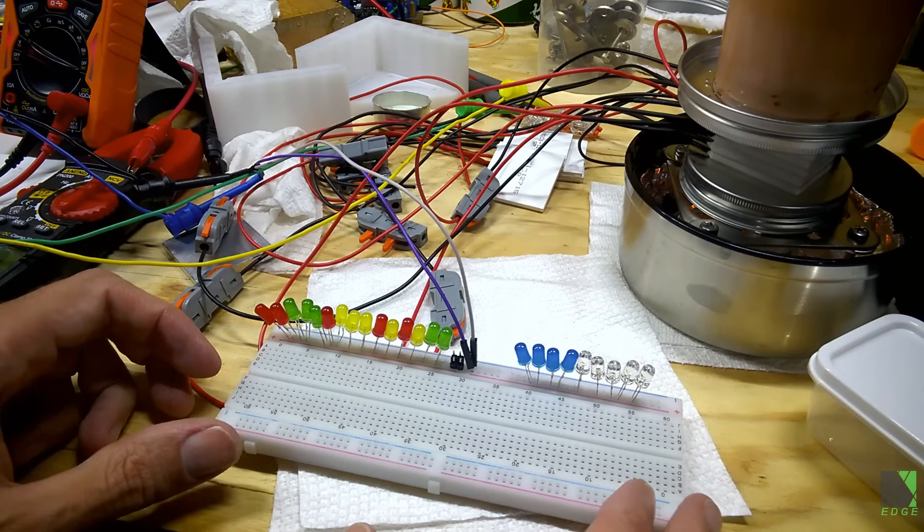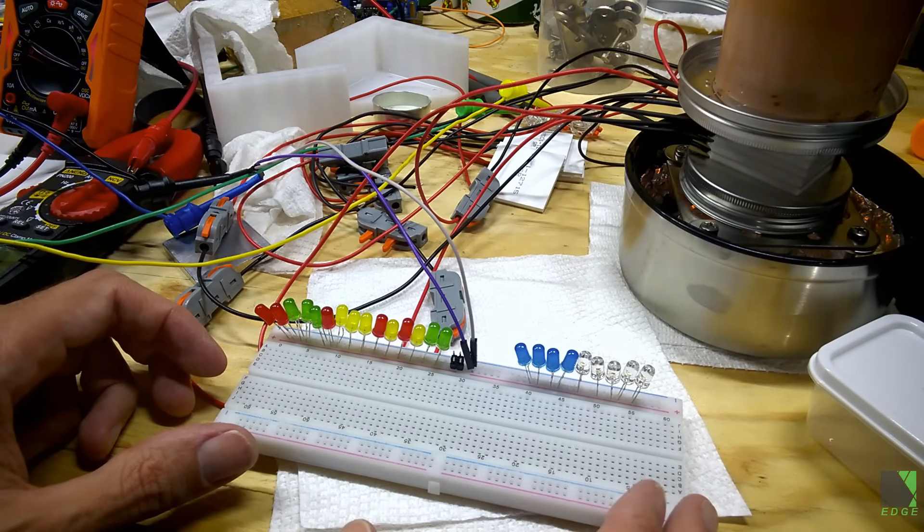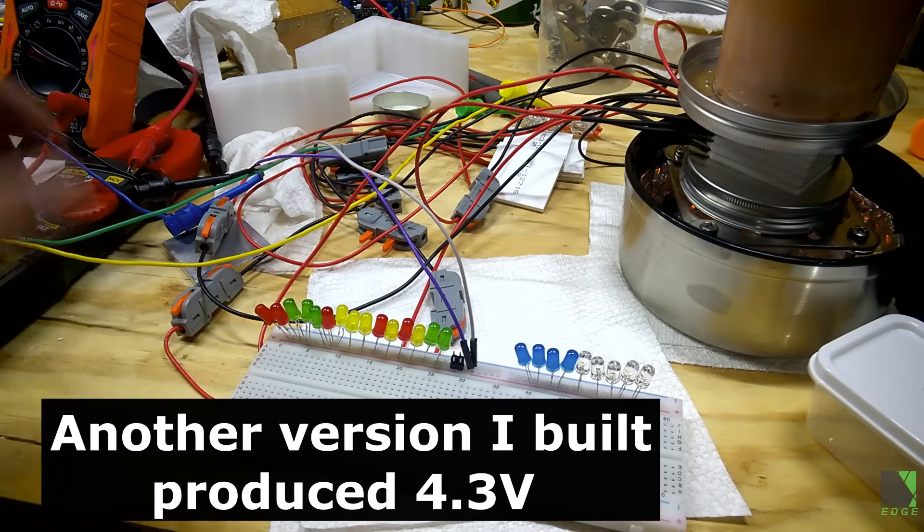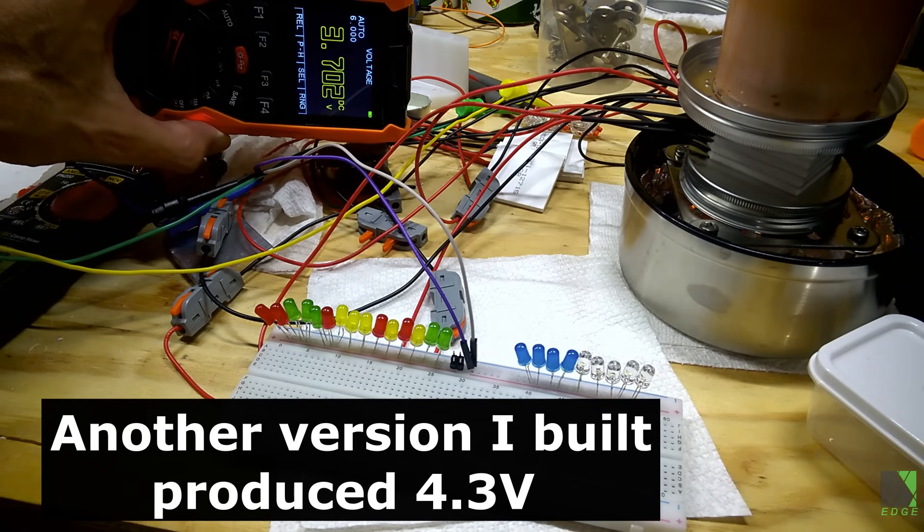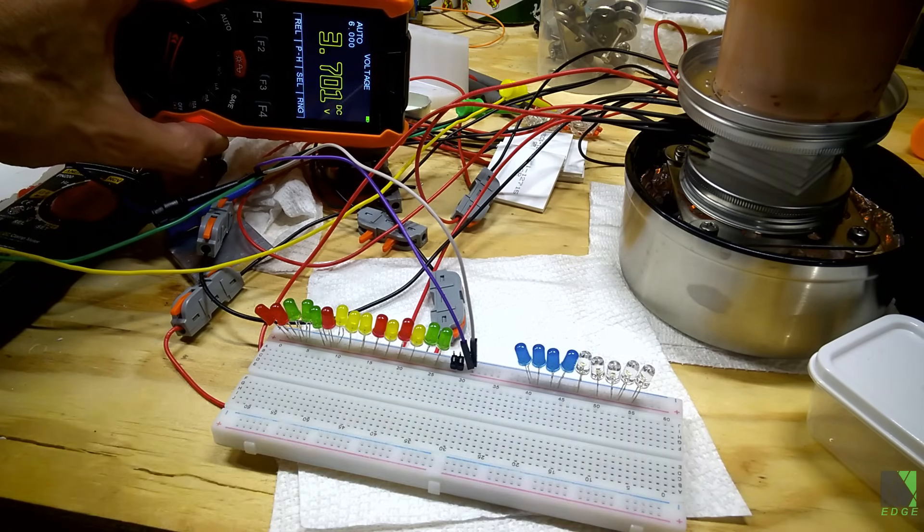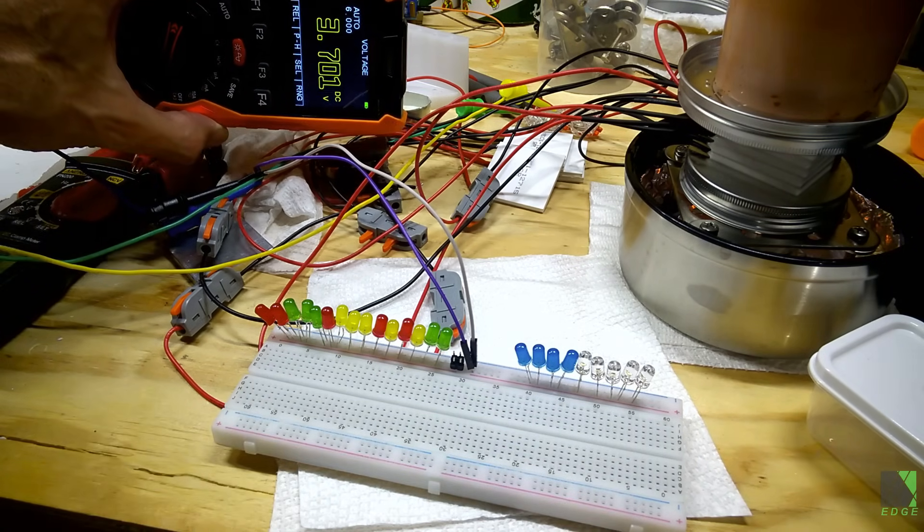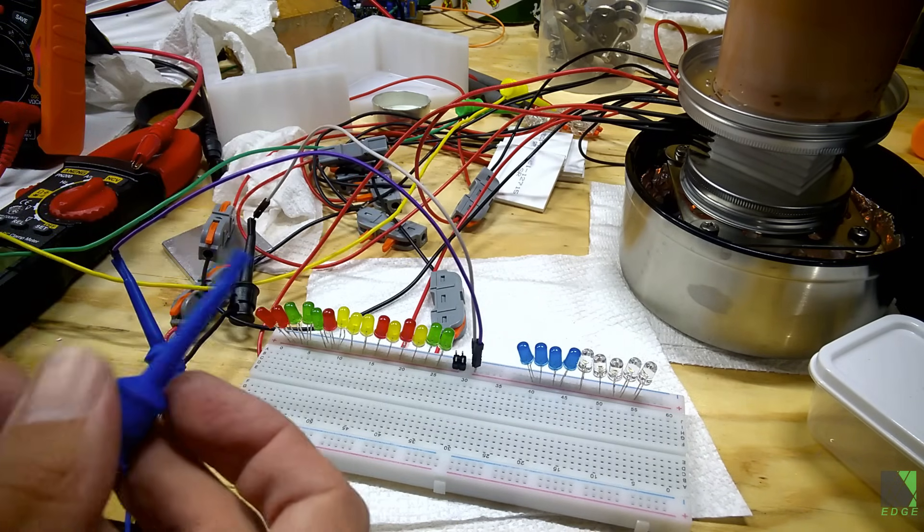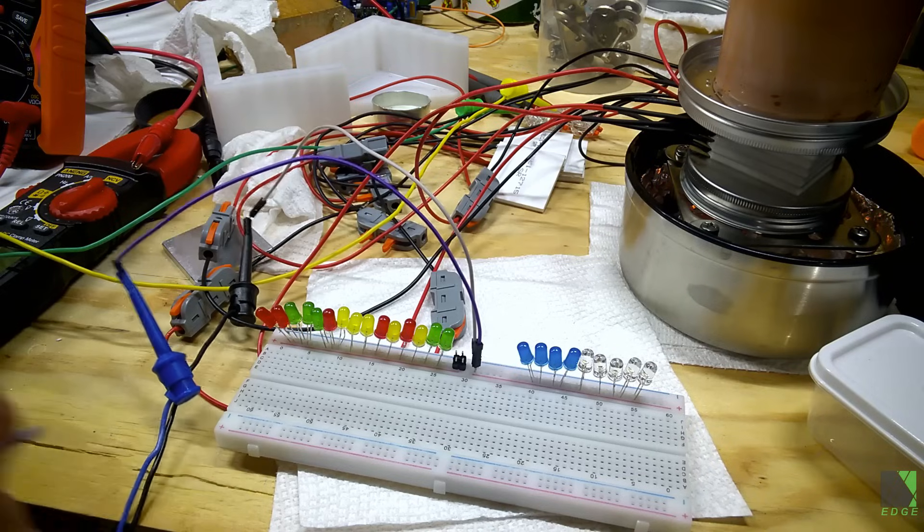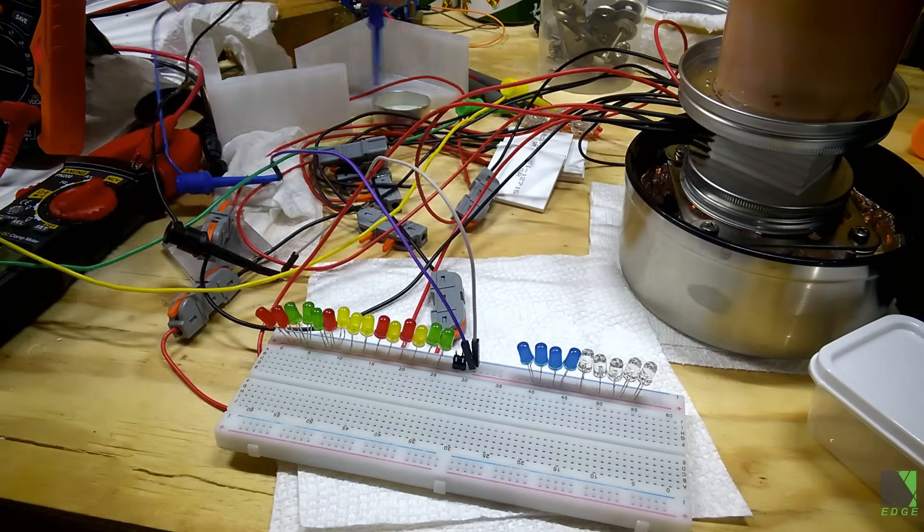So the highest I've ever gotten on this particular setup is 3.6 to 3.7 volts. There's the meter right there. That's open circuit though. So you can think of this a lot like a crystalline solar cell. 3.7 volts is not its real voltage. So I will just go ahead and turn on the LEDs. I did have a DC converter on there, but I've taken that off. And now I'm just doing straight from the thermopiles.